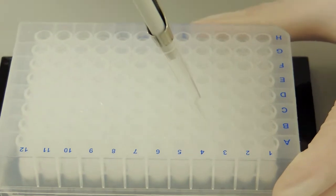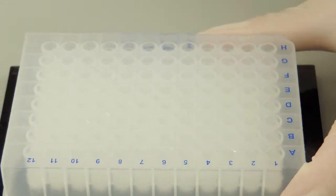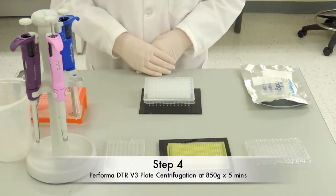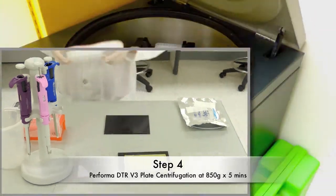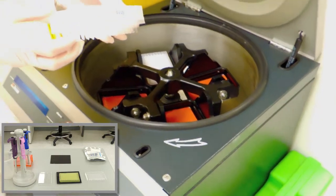Samples are loaded directly onto the center of the column. Once you are finished loading your samples, the Performa and Capillary plates are once again sent off for centrifugation at 850 Gs, but this time for 5 minutes.